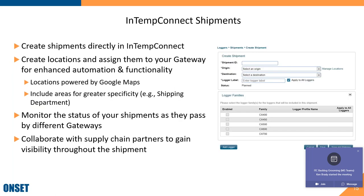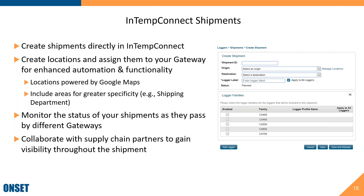Intemp Connect shipments are for more traditional shipments where you know the origin and destination — another affiliated warehouse or supply chain partner. You know well ahead of time where the loggers and product are going and who will receive them. This involves more user management but creates a more traditional shipment.